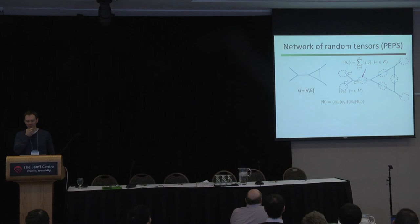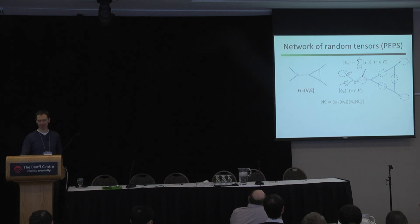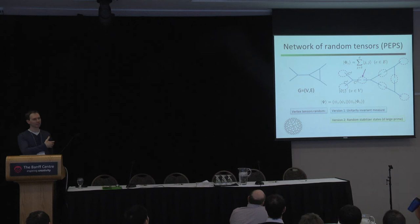This is essentially a version of what's called a PEPS — a projected entangled pair state. If I choose my graph to be something like the MERA graph, I get a state on the boundary whose entanglement structure should represent hyperbolic space. To specify a model — a family of quantum states — you just specify the distribution over these tensors psi_v. For the rest of the talk, think of it as the unitarily invariant measure on all quantum states.